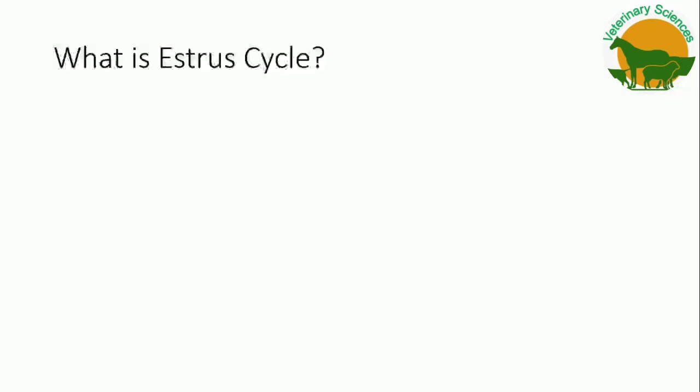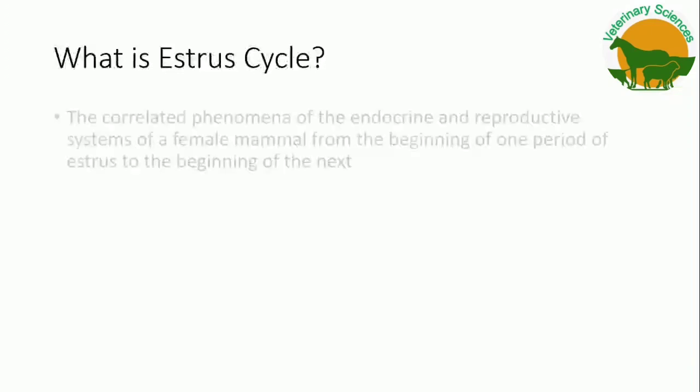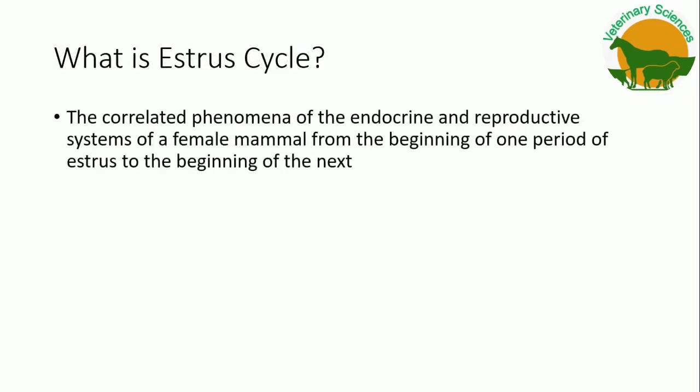First of all we will start from the basics: what is the estrus cycle? It is a correlated phenomena of the endocrine and reproductive systems of a female mammal, other than human, from the beginning of one period of estrus to the beginning of the next.